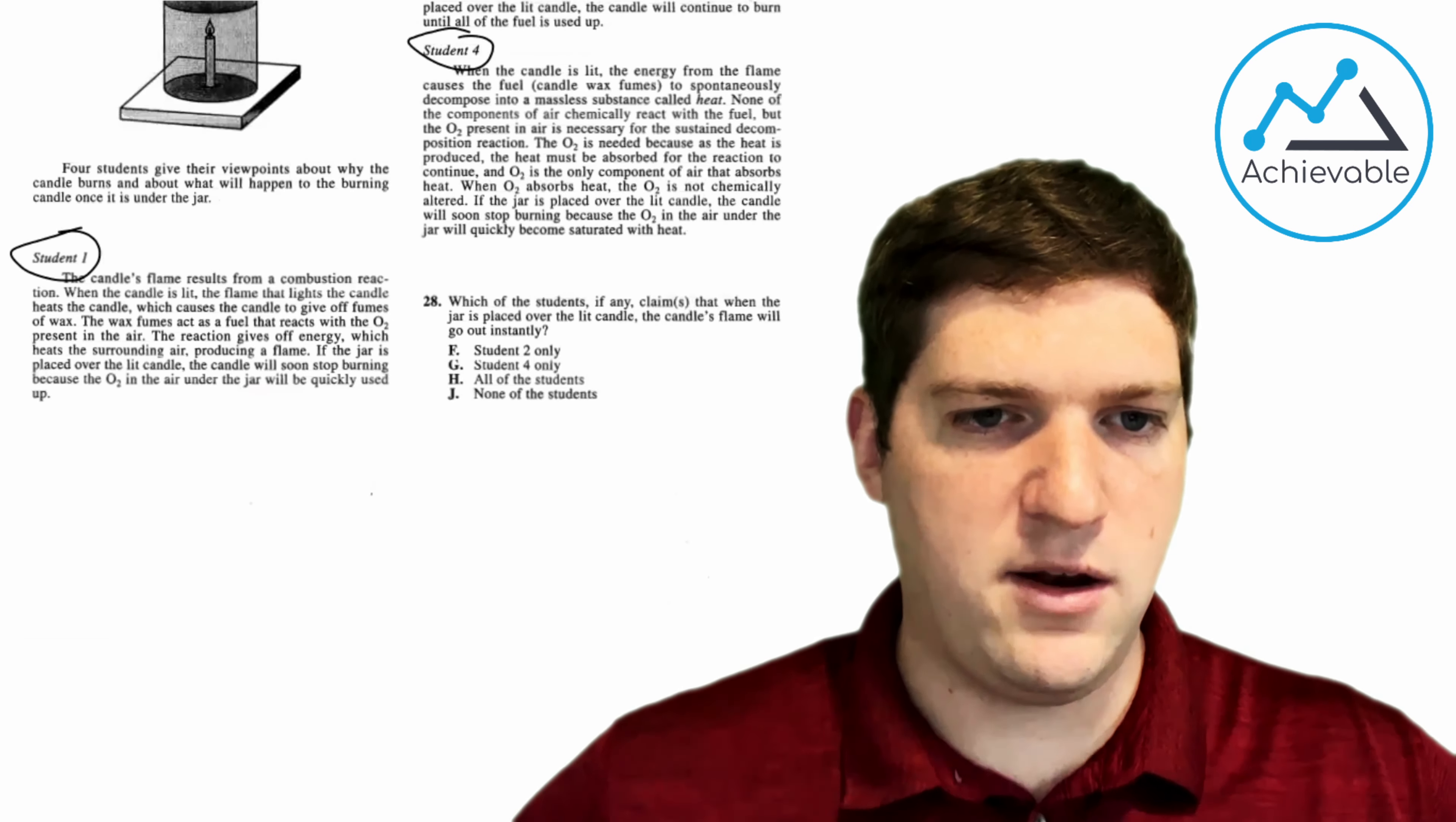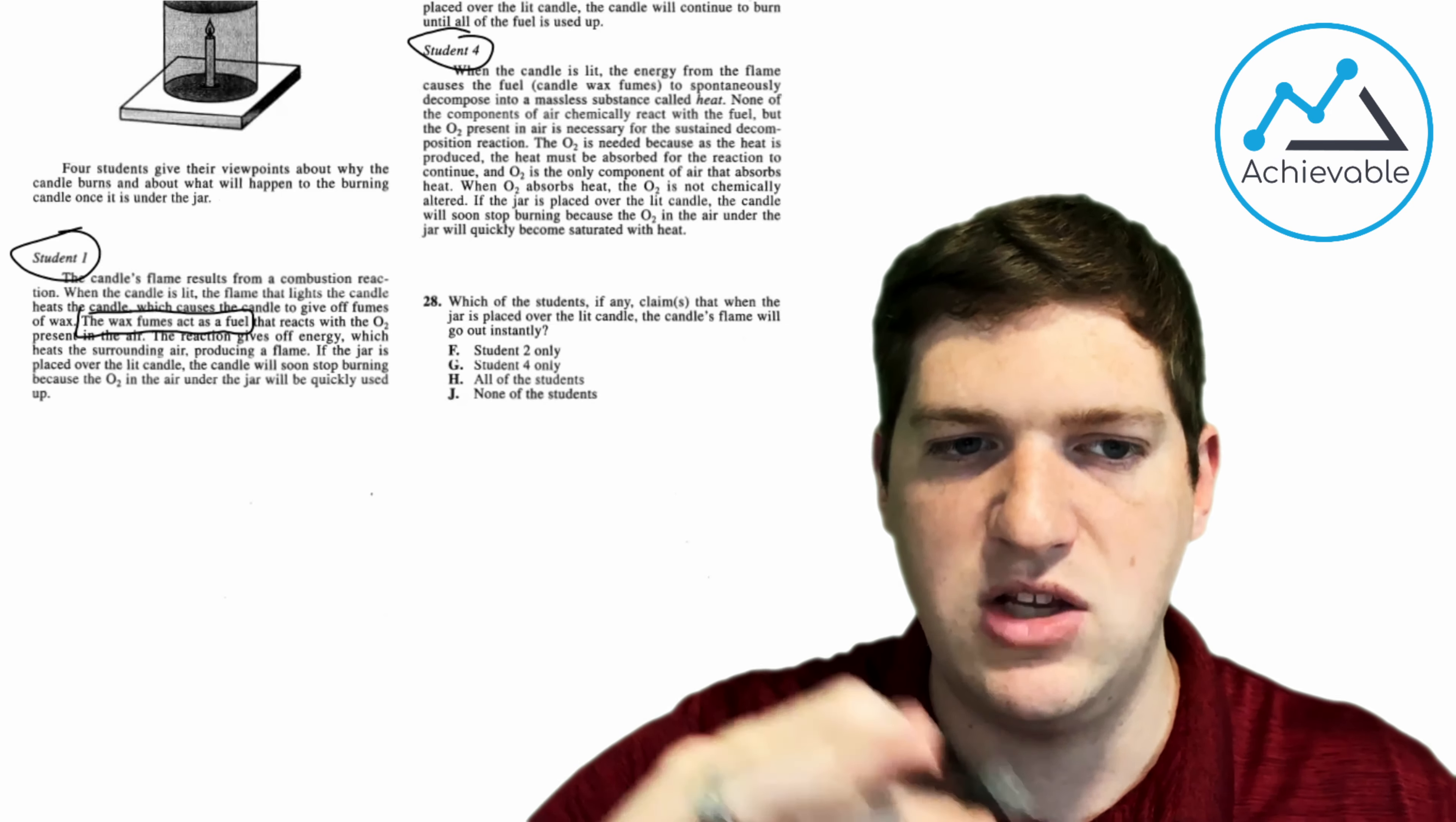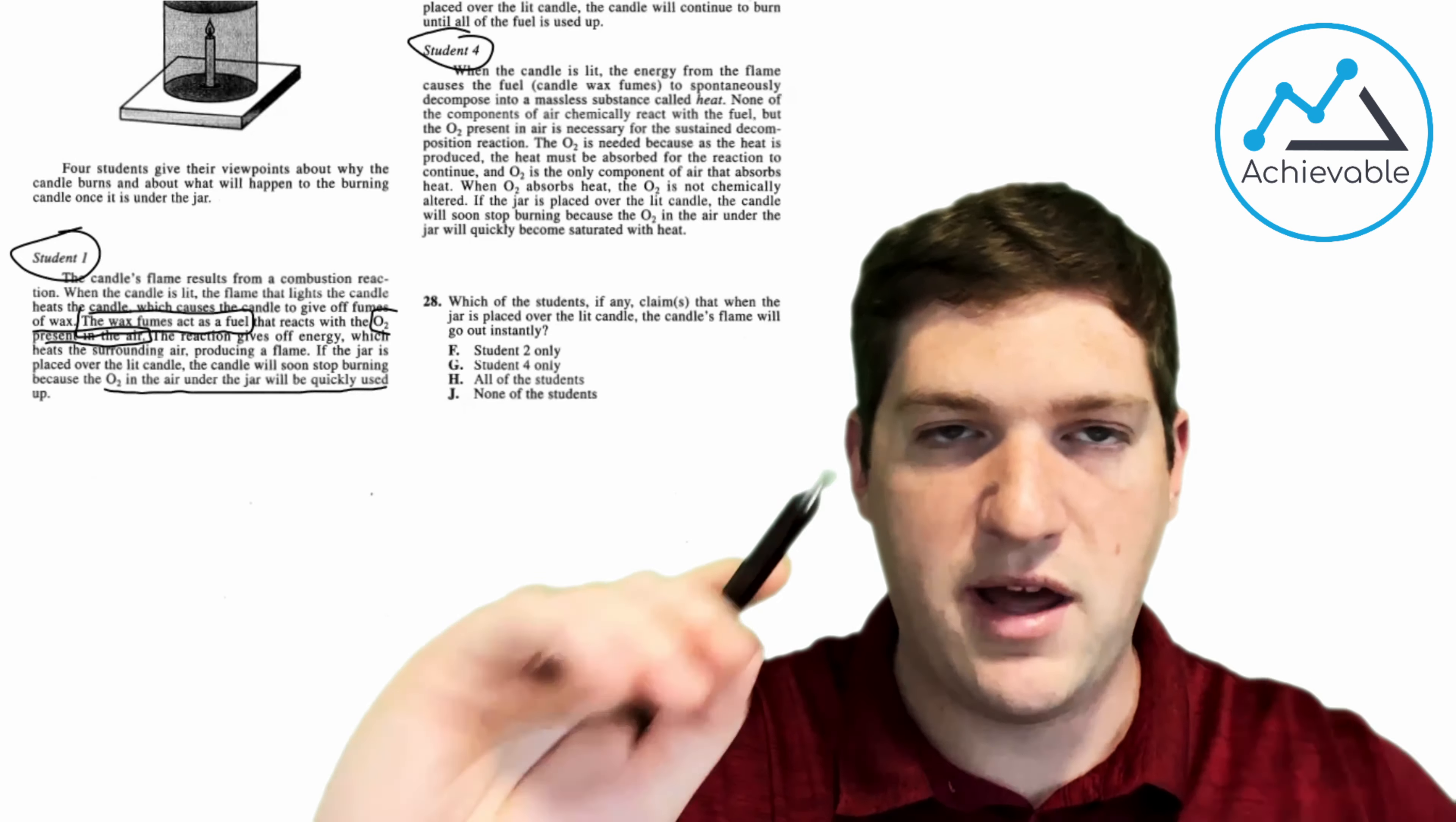So real quickly, student 1, the candle's flame results from a combustion reaction. When the candle is lit, the flame then lights the candle, heats the wax, or heats the candle, which causes the candle to give off fumes of wax. The wax fumes act as a fuel. So right there, that seems like a pretty key point. He said the wax fumes act as a fuel. As you do this more, you'll realize that a lot of these passages have a similar format when they're giving their points. I'm guessing that each student later will tell what they think acts as a fuel. So we're going to keep going. That reacts with the O2 present in the air. I think that's going to probably be a pretty key point as well. The reaction gives off energy, which heats the surrounding air, producing a flame. If the jar is placed over the lit candle, the candle will soon stop burning because the O2 in the air under the jar will be quickly used up. I bet you they'll differ on that as well. So now that I've read student 1, I go down here and answer his question.